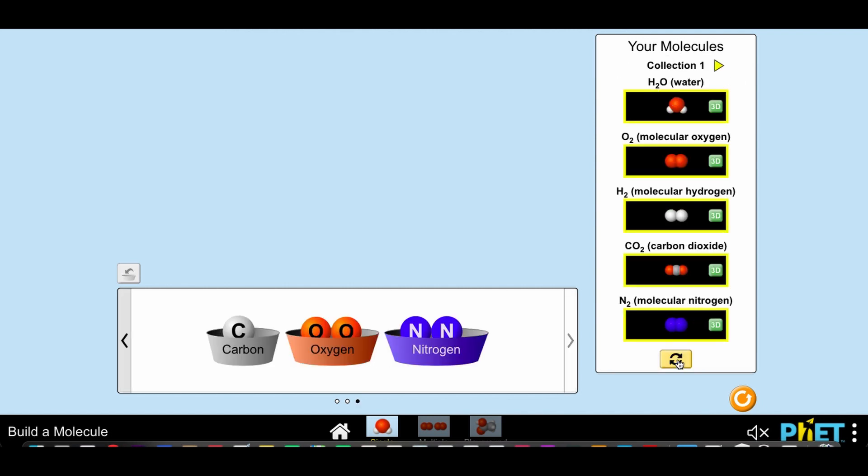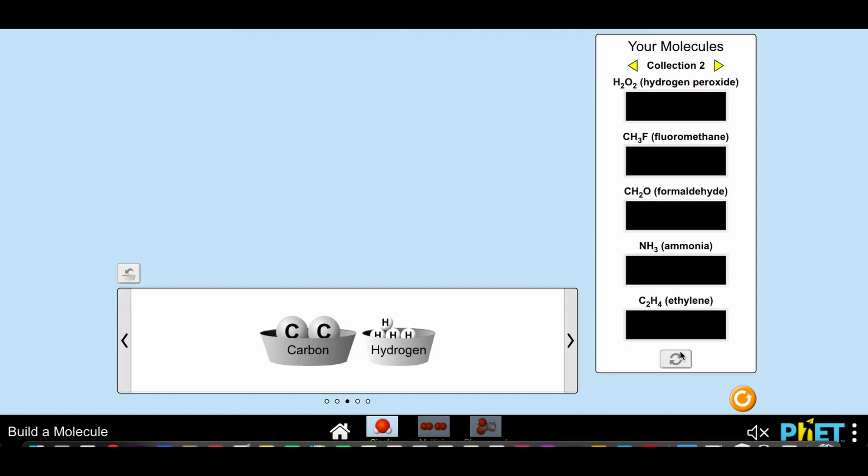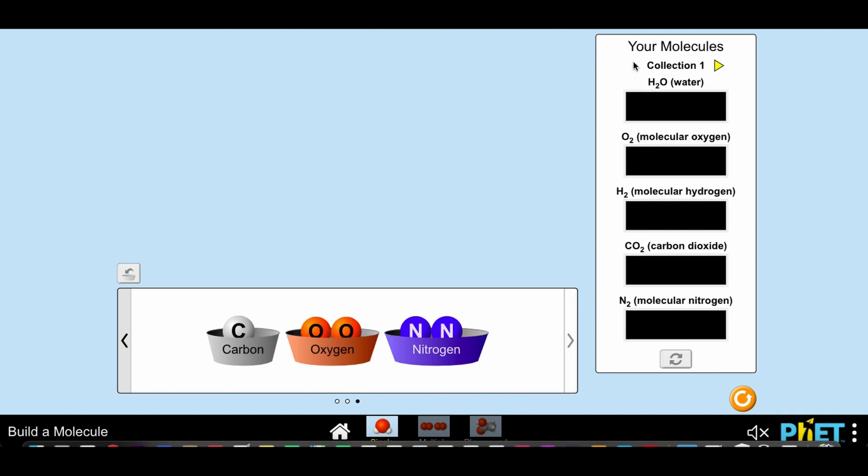Once you click the button at the bottom of the collection, you erase everything in that collection but your other collections remain. When you hit the reset button on the bottom right, all of your molecules disappear.